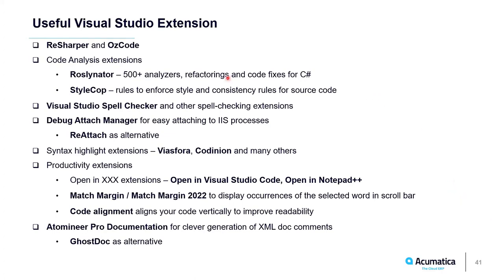There are many code analysis extensions for Visual Studio, some paid, many free. For example, ErrorProne.NET is a free open source extension with more than 500 diagnostics, refactorings, and code fixes. Another well-known extension is StyleCop, which enforces code style rules. There are also plugins providing security code analysis. Note that you should look for code analysis extensions not only in Visual Studio Marketplace but also in the NuGet packages gallery — many are available only as NuGet packages. For example, to use the latest StyleCop analysis, install the StyleCop.Analyzers NuGet package.